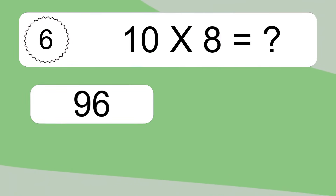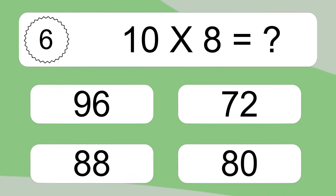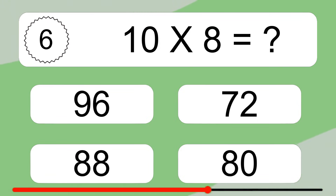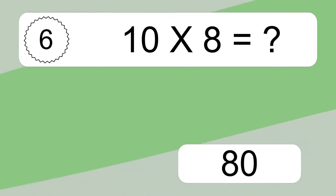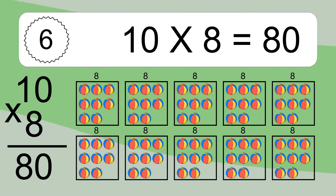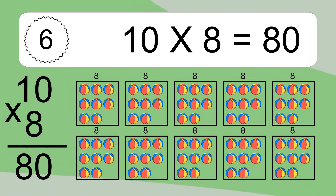10 times 8 equals what? 10 times 8 equals 80. We have 10 boxes, and each box has 8 colorful balls inside. If you count all the balls in all the boxes together, you will have 10 times 8 balls. This equals 80 balls.